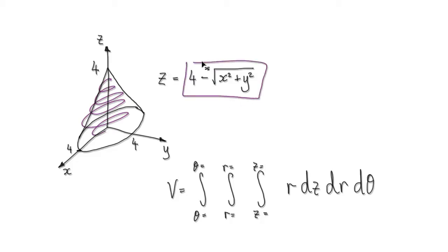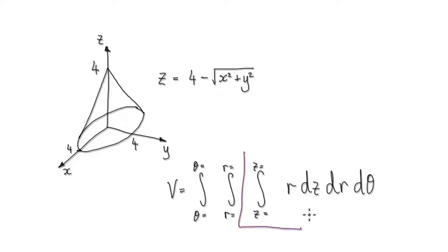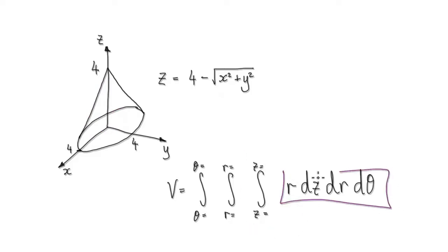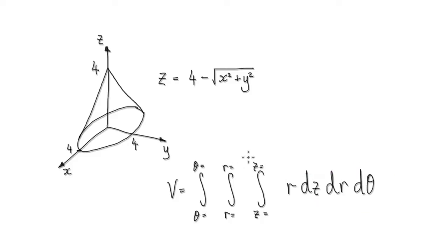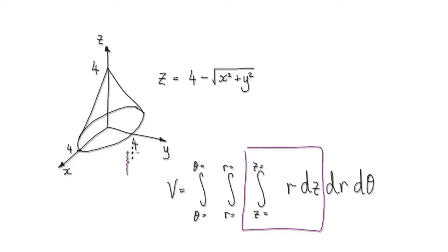So now let's try and set up our triple integral. We've seen as to why this is the case, so I'm expecting you to understand this step. Looking at the inner integral, moving in the z direction — you hit the bottom when z equals 0, and then you leave at the surface.